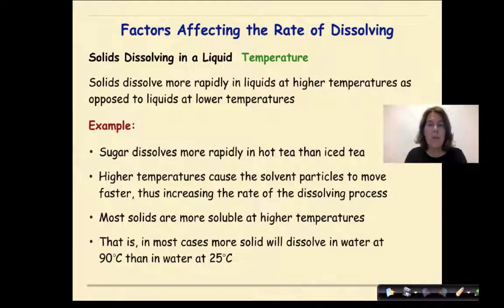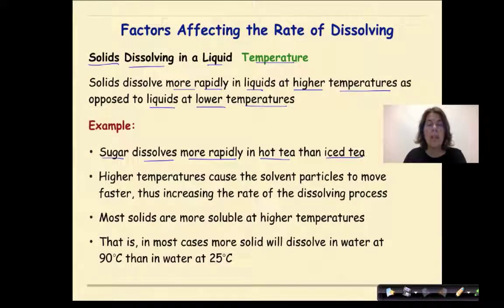Factors affecting the rate of dissolving. Solids dissolving in a liquid with a focus on temperature. Solids dissolve more rapidly in liquids at higher temperatures as opposed to liquids at lower temperatures. For example, sugar dissolves more rapidly in hot tea than in ice tea. Higher temperatures cause the solvent particles to move faster, thus increasing the rate of the dissolving process.